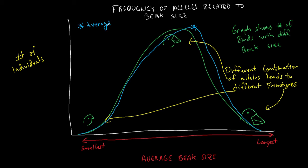What that tells us is there are more frequency of the alleles that cause the bigger beaks to show up in the population, and less frequency of the alleles that cause the smaller beaks to show up in the population.